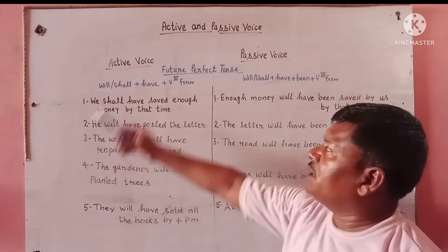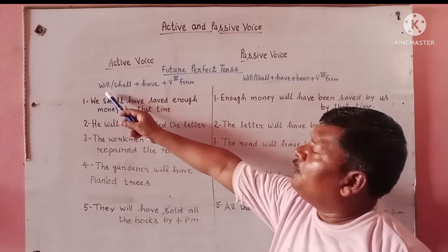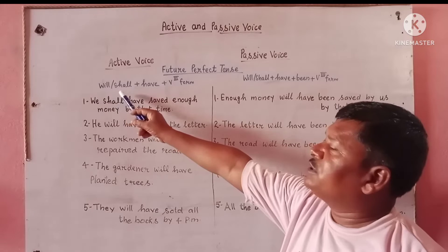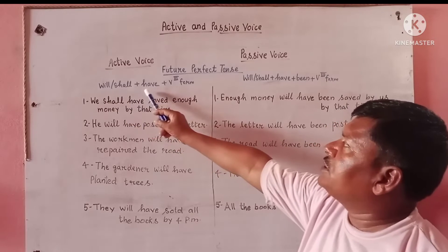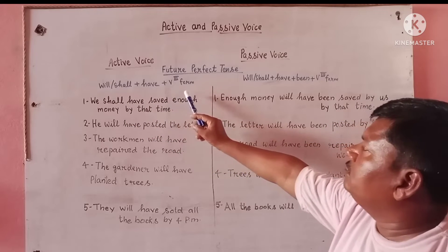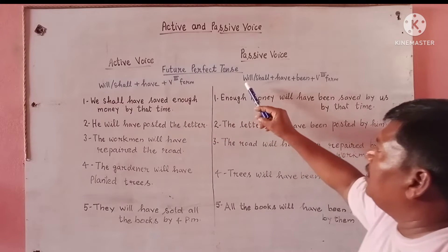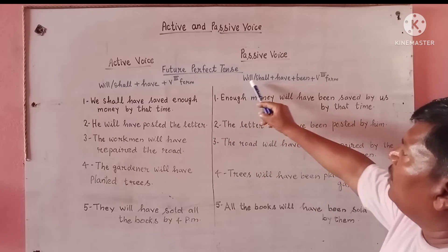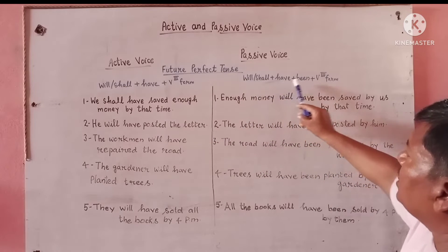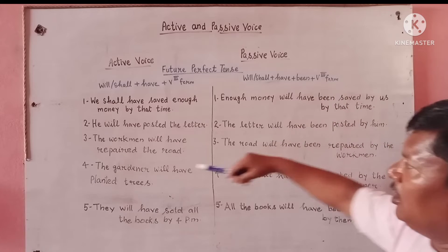Let's come to see the structure of active voice. In active voice: subject plus will/shall plus have plus verb's third form. In passive voice: subject plus will/shall plus have plus been plus verb's third form.